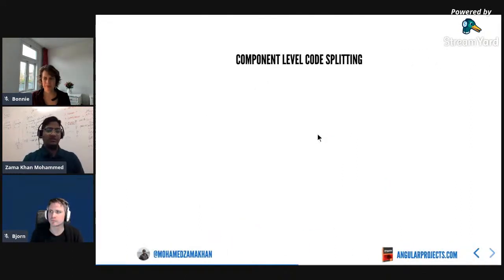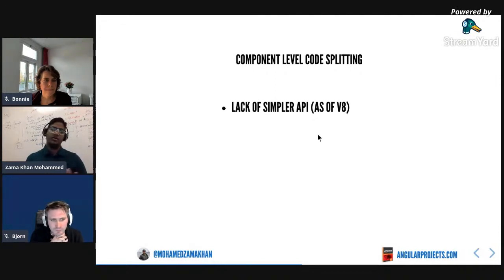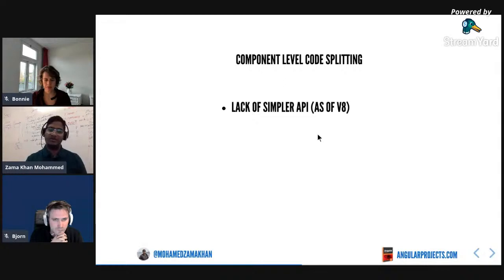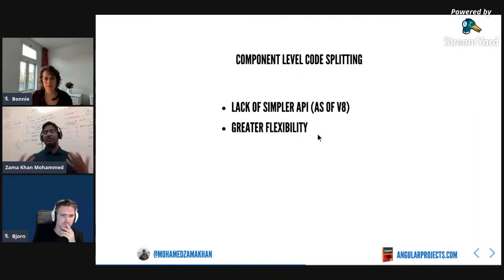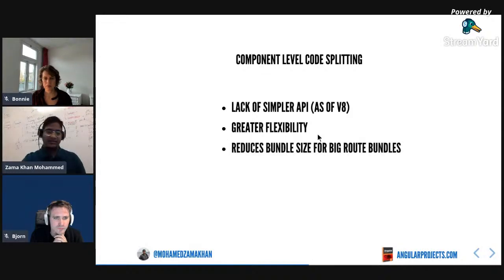Now let's go to component-level code splitting. I said route-level code splitting is very simple, but component-level code splitting lacks that simpler API as of v8. We hope that version 9, version 10, or something in the future will make this much easier - there are talks about doing it. Component code splitting gives you greater flexibility of how you can load bundles based on conditions, and it can reduce the bundle size for particular routes that have a lot of different logic.